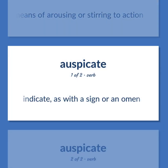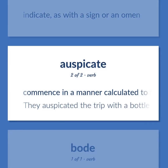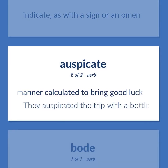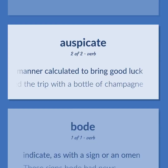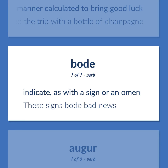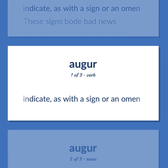Indicate / Auspicate / Bode: Indicate, as with a sign or an omen. Commence in a manner calculated to bring good luck. Example: They auspicated the trip with a bottle of champagne. Indicate, as with a sign or an omen. Example: These signs bode bad news.